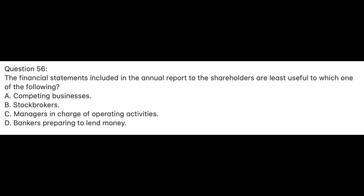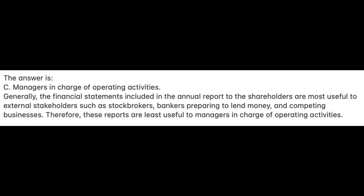Question 56. The financial statements included in the annual report to the shareholders are least useful to which one of the following? A. Competing businesses; B. Stockbrokers; C. Managers in charge of operating activities; D. Bankers preparing to lend money. The answer is C: Managers in charge of operating activities. Generally, the financial statements included in the annual report are most useful to external stakeholders such as stockbrokers, bankers preparing to lend money, and competing businesses. Therefore, these reports are least useful to managers in charge of operating activities.